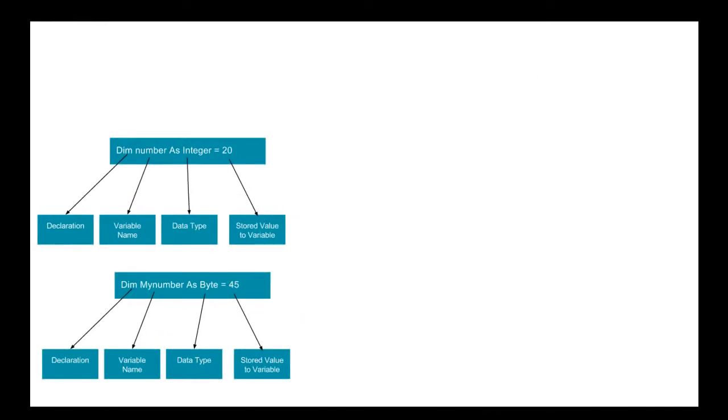Let's first define what is data. In computer science, data refers to information stored or processed by a computer.